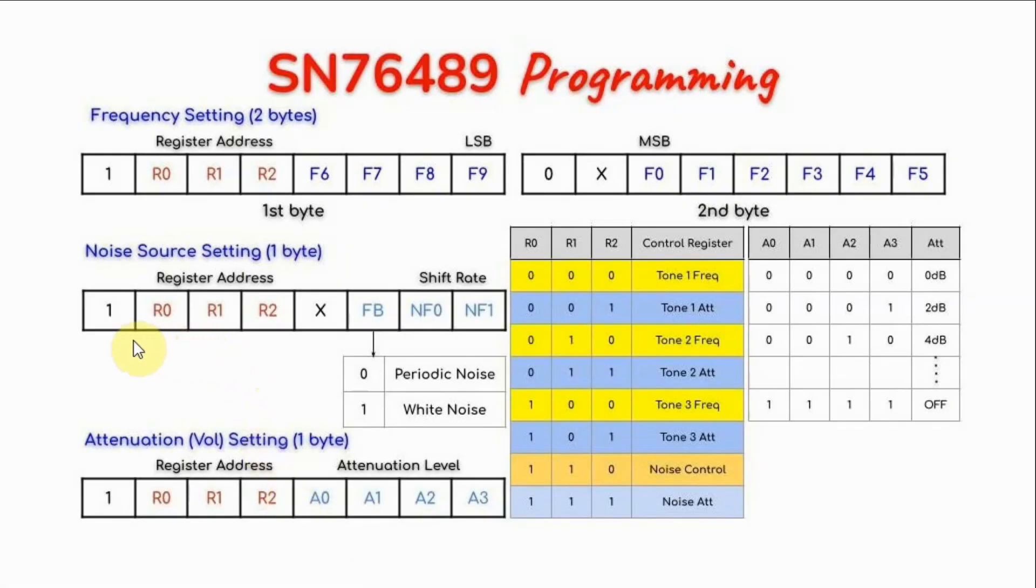To generate the noise sound, we need to send this byte. These three bits determine the register address, and it should be for the noise control register, and the value is 110. This is the feedback bit. 0 gives us periodic noise, 1 gives us white noise.